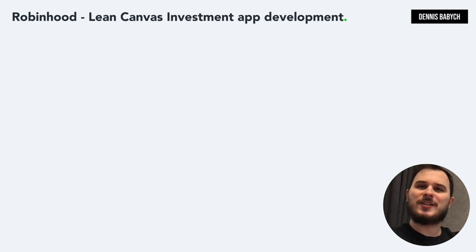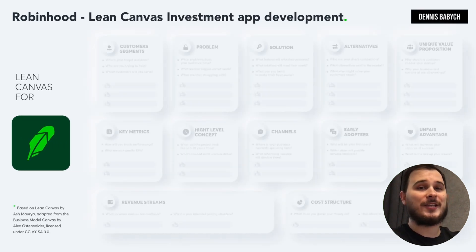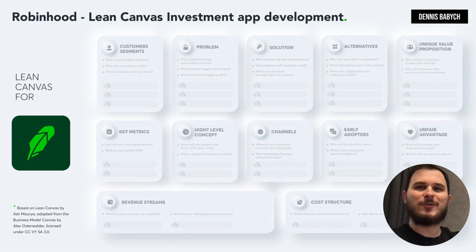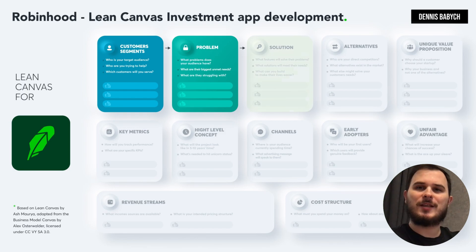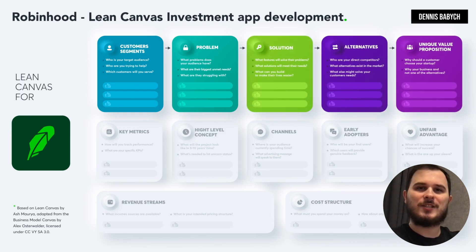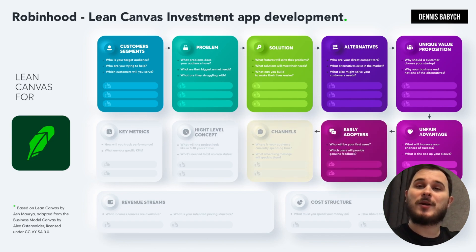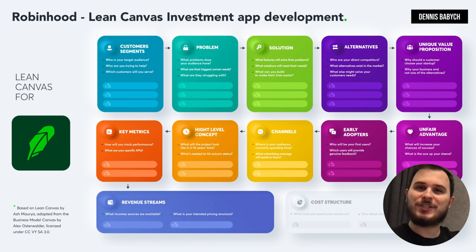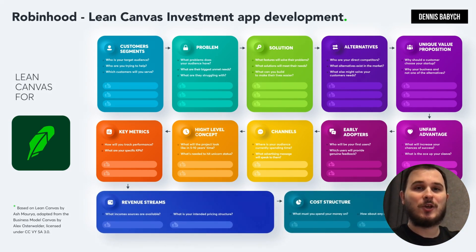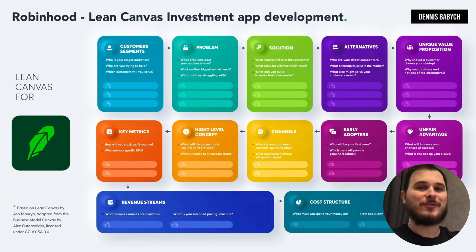You already know that not all features of Robinhood's app are necessary for your app. A Lean Canvas business plan can assist you in identifying your core features and unique advantages. Start by identifying your target audience and determining what type of functionality they need that isn't already being provided by platforms such as Robinhood or Plus 500. Additionally, evaluate your potential competitors or alternative solutions that may already exist. Consider your unfair advantage — what sets you apart from the competition?